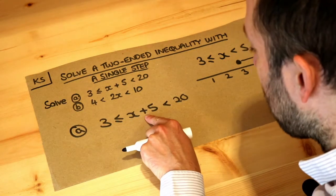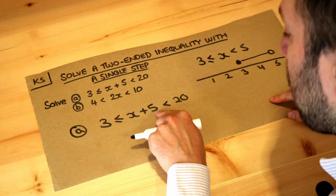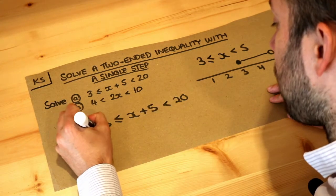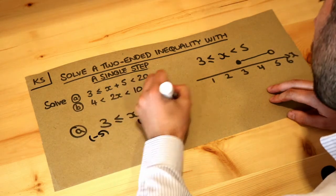Now let's look around x. x we're adding 5 to it, we want to get rid of that plus 5 so that the x is on its own in the middle of the inequality. So we're going to subtract 5 from all three parts of the inequality.